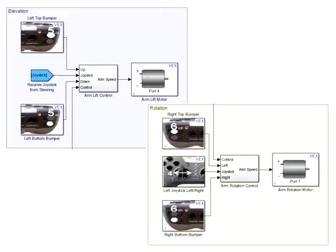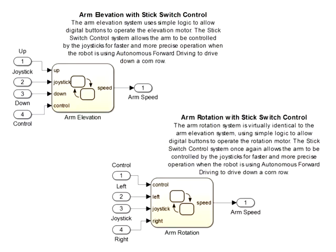Harvest gathers corn using an extremely capable arm system with a large range of vertical motion and the ability to rotate 360 degrees in either direction. The elevation and rotation systems are virtually identical. Since the tank style steering system uses both joysticks to drive the robot, the arm systems use digital buttons for control.